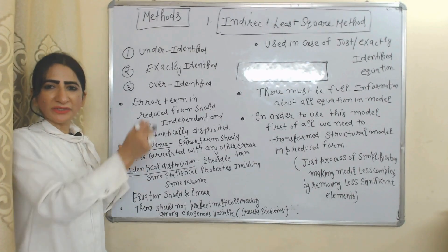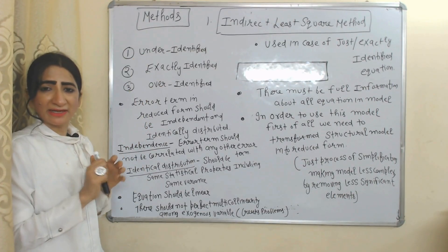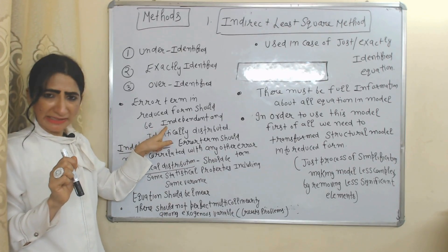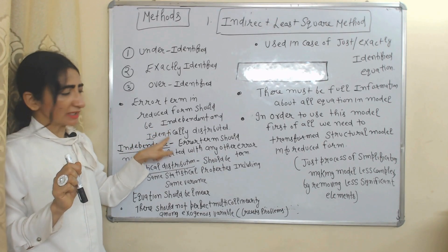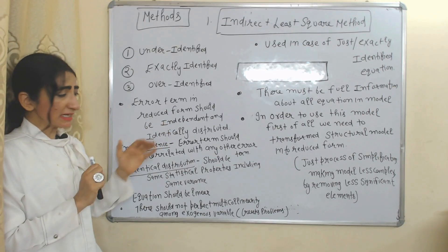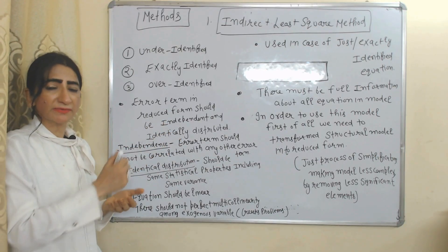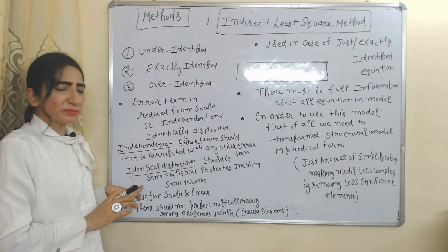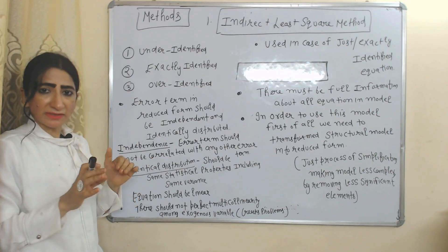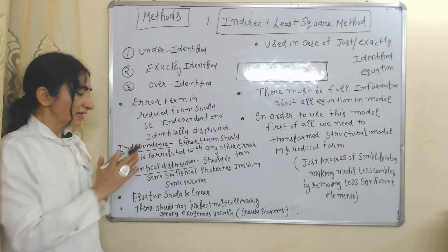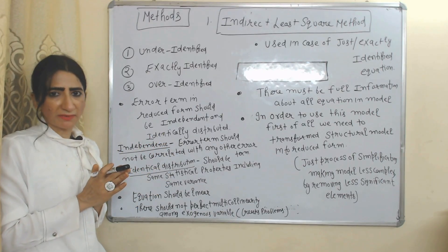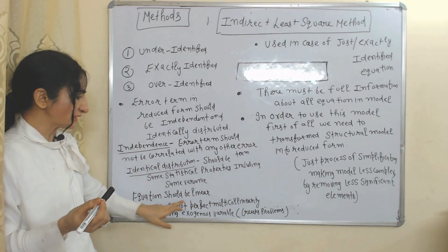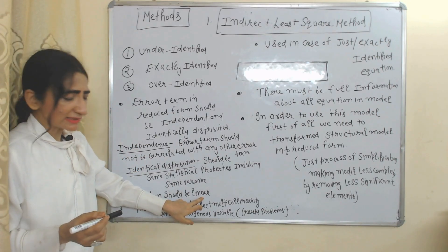Under ILS, the error term in reduced form should be independent and identically distributed (i.i.d.). Independent error term means the error term should not be correlated with any other error term. Identical distribution means the error terms should have the same statistical properties, including the same variance. This method is more appropriate when equations are linear.